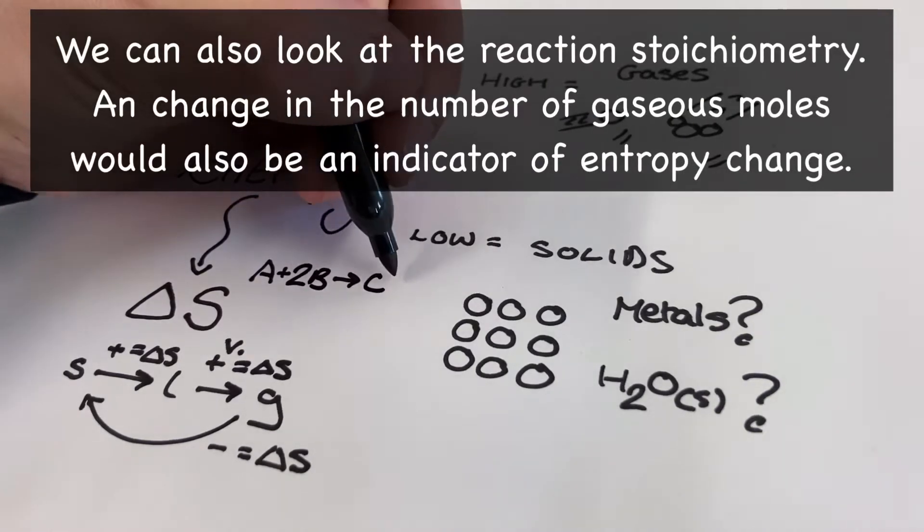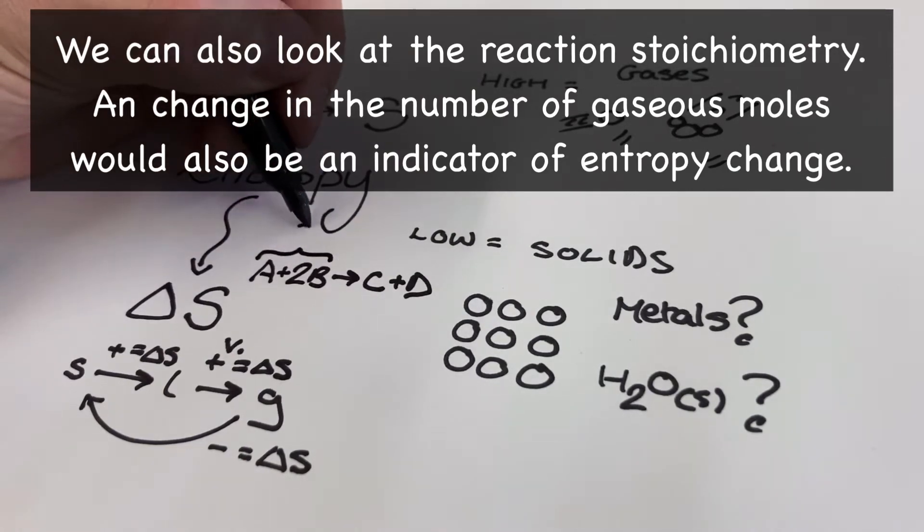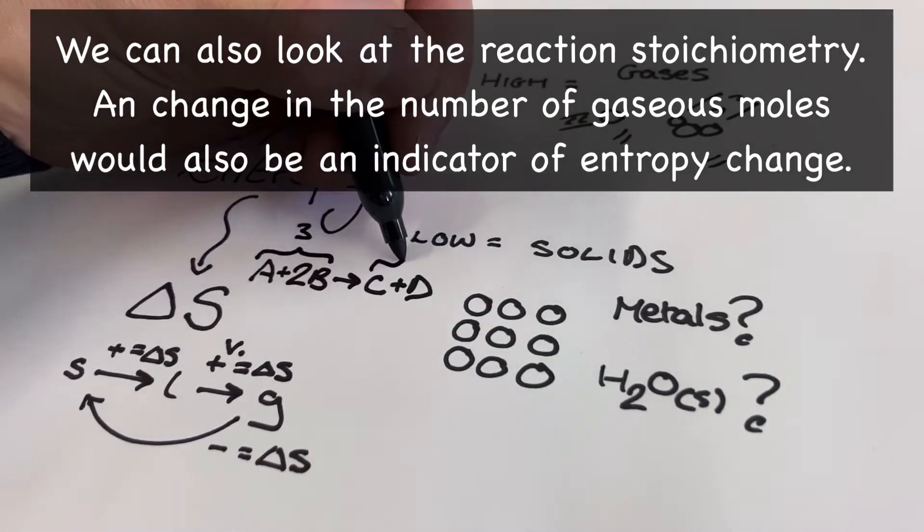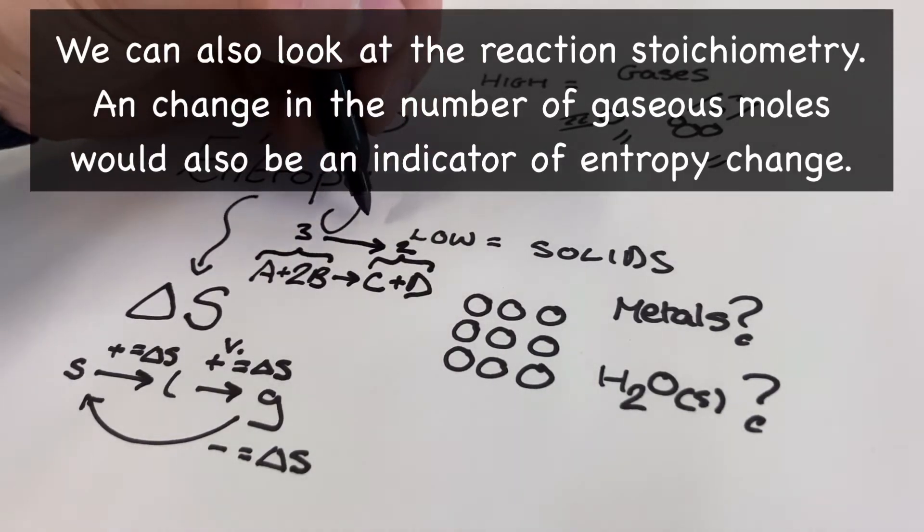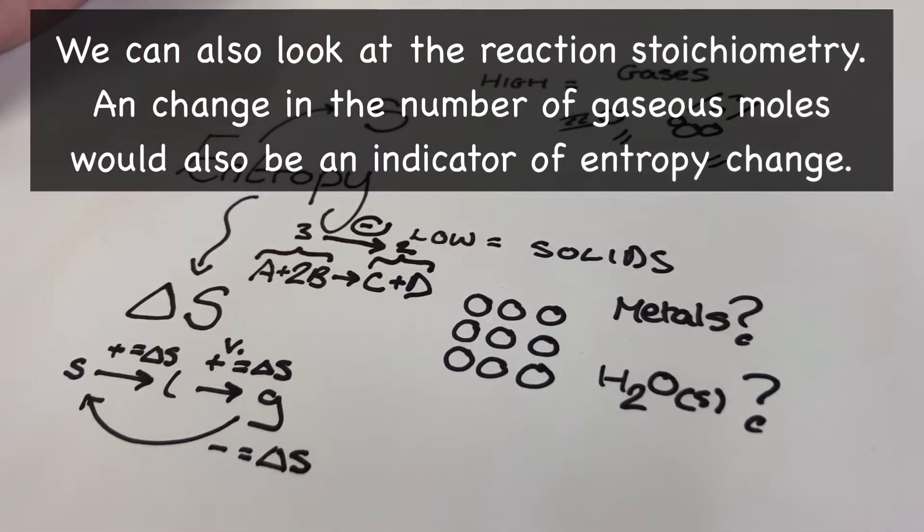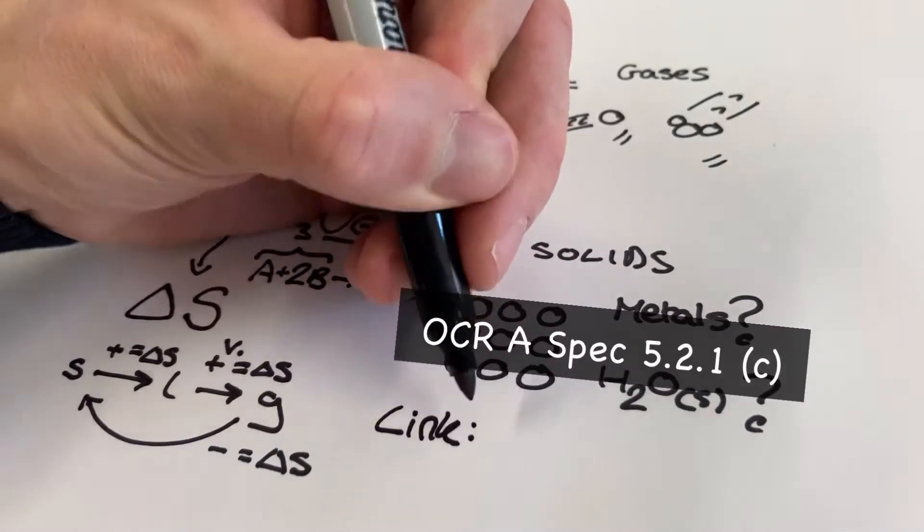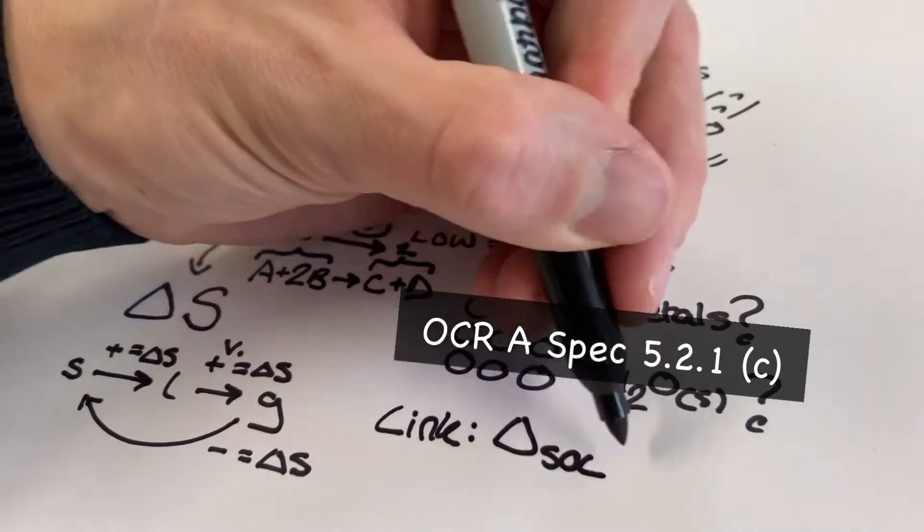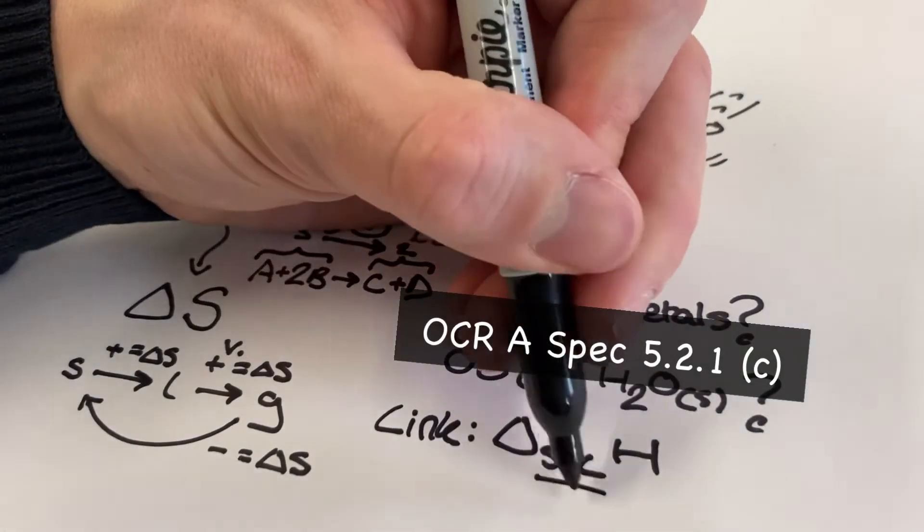We can also use the reaction stoichiometry to help predict the sign of an entropy change. For example, a reduction in the number of gaseous moles would suggest a negative entropy change for a chemical reaction. We also see a regular crossover in exam questions with the enthalpy of solution work. Now, in these reactions we see a solid ionic lattice dissolving in water, which creates an aqueous solution. This kind of reaction is going to have a positive entropy change.